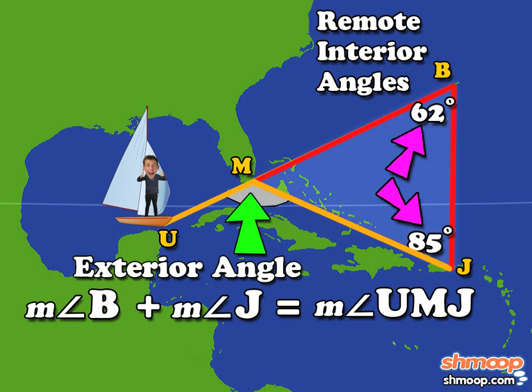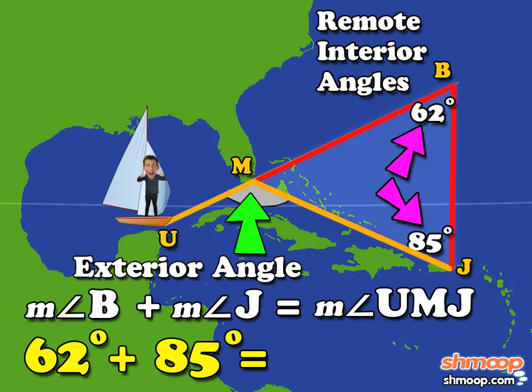Our two remote interior angles are 62 and 85 degrees. So the exterior angle has a measure of 62 degrees plus 85 degrees, or 147 degrees.